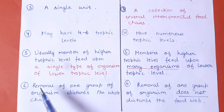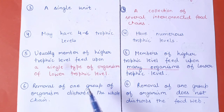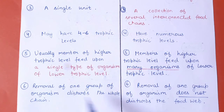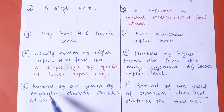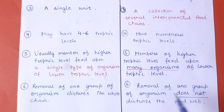In a food chain, the removal of one group of organisms disturbs the whole chain. If you remove an animal from a food chain, the entire food chain will be disturbed.